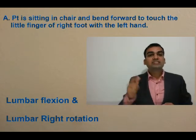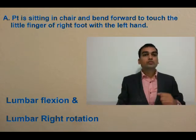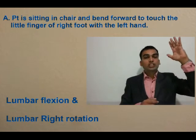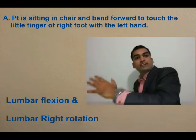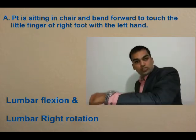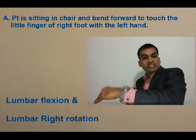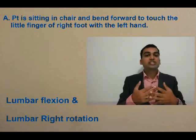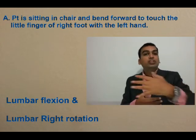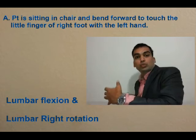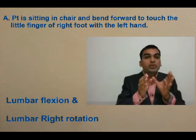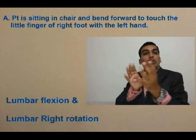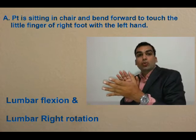The first activity: with your right hand, you need to touch your left toe while sitting in a chair. This means you bend forward — that's flexion — and then rotate towards the right side. So the lumbar vertebrae are doing flexion and rotating towards the right side.